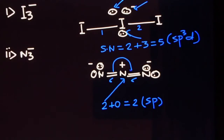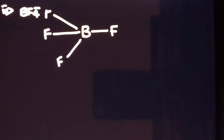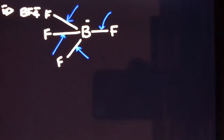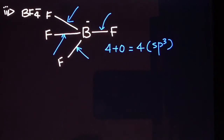Now let's look at BF₄⁻, that is tetrafluoroborate. The structure is tetrahedral with a negative charge. First we find the number of sigma bonds — there are four sigma bonds formed by the boron atom, so the number of sigma bonds is four. There is no lone pair on this boron, so the steric number equals four and the hybridization will be sp3.